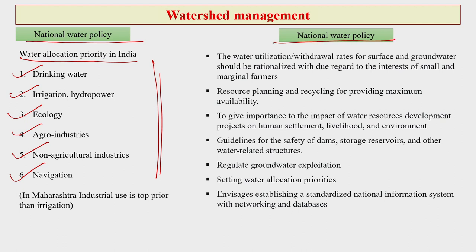Now let us see the national water policy (NWP). The water utilization and withdrawal rates for surface as well as groundwater should be rationalized, giving due regard to the interest of small and marginal farmers. This particular point is very important because small and marginal farmers do not have much resources, neither do they have the required number of pumps to pump out groundwater for irrigation.